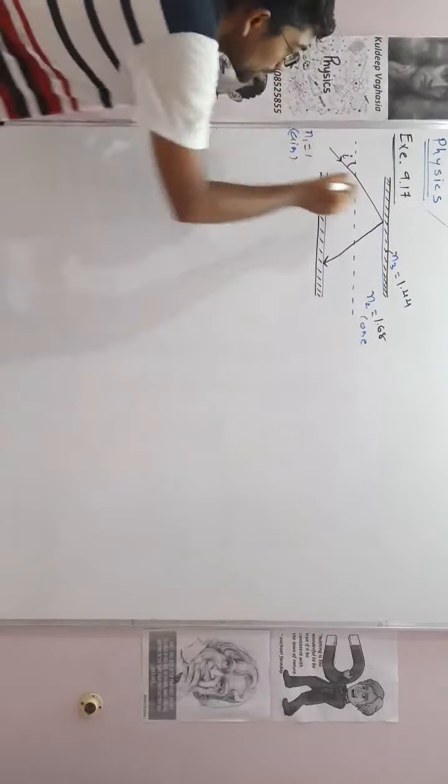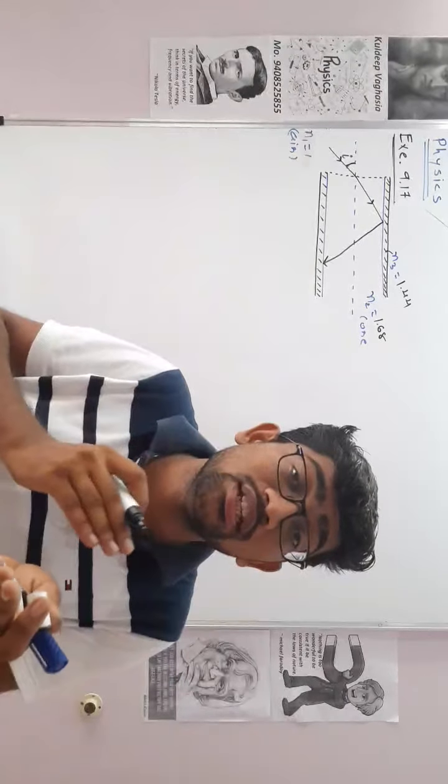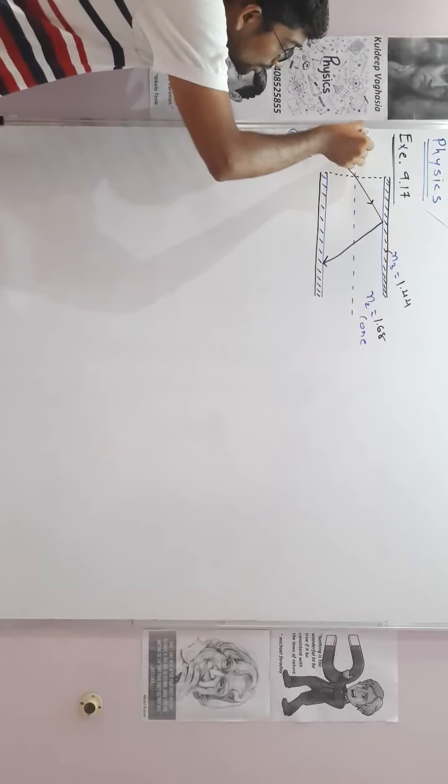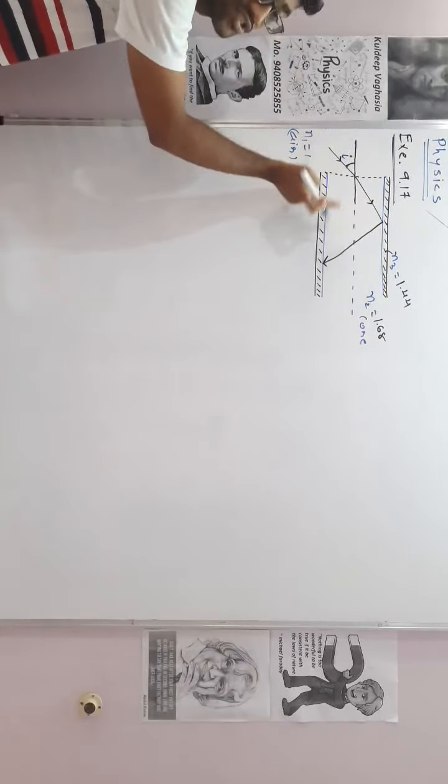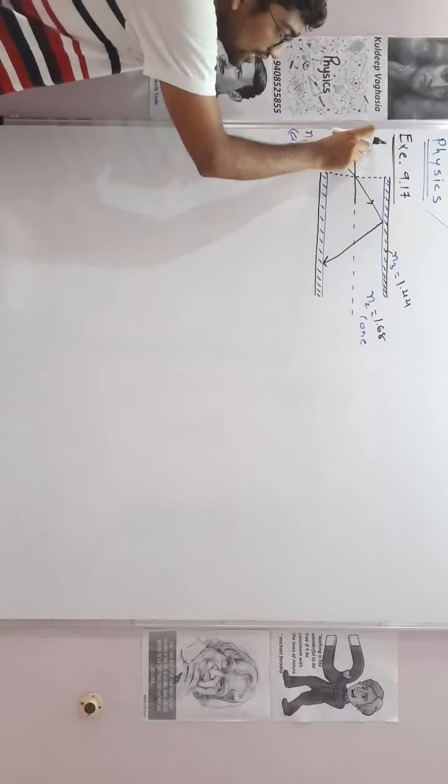The incident angle I1 at the core-cladding interface should be greater than the critical angle. When light enters from air (N1) into the core part (N2), it goes from rare to denser medium, so refraction happens towards the normal. This is the incident angle — the angle between the ray and the perpendicular (normal) to the surface where the medium changes.